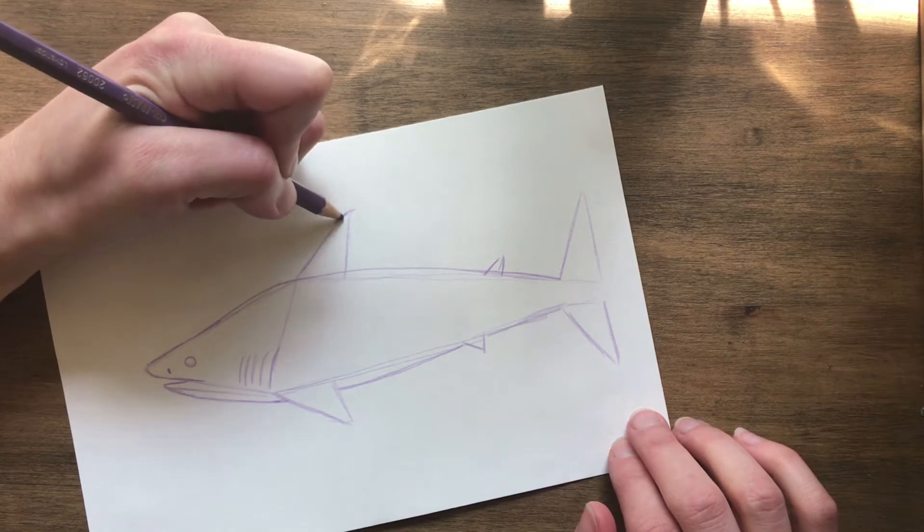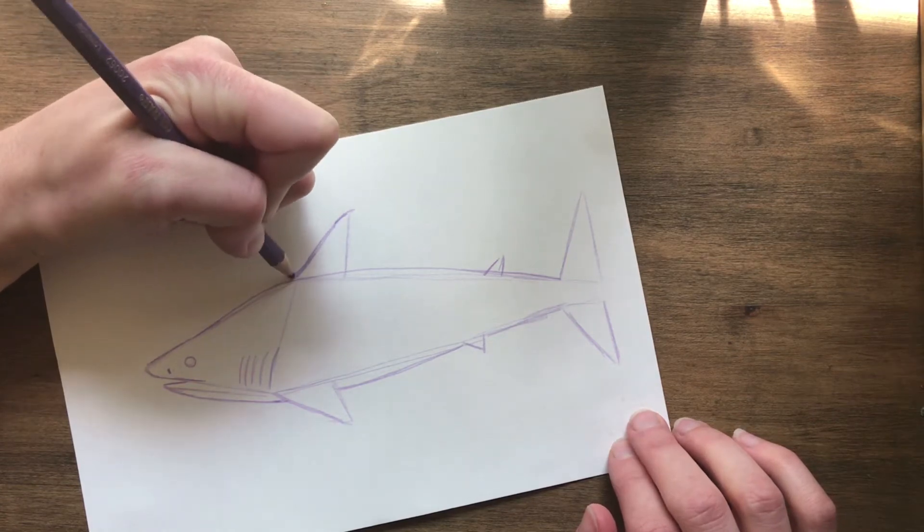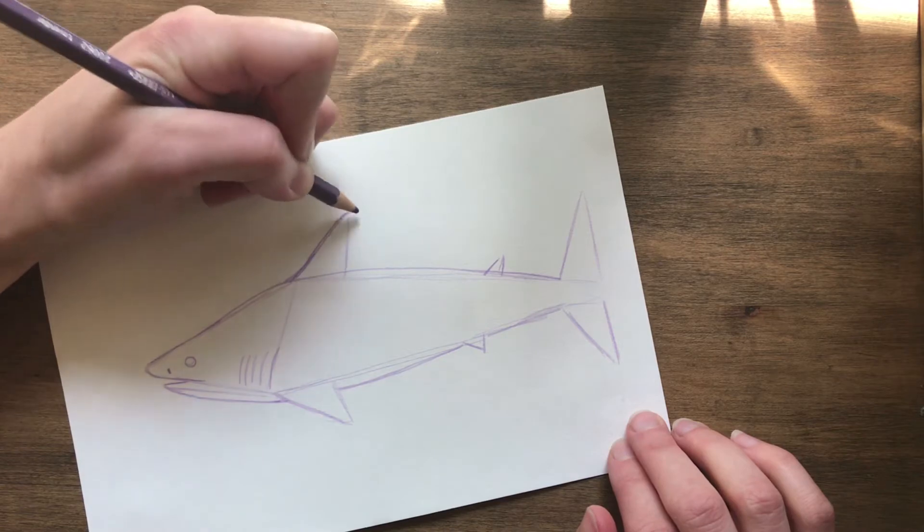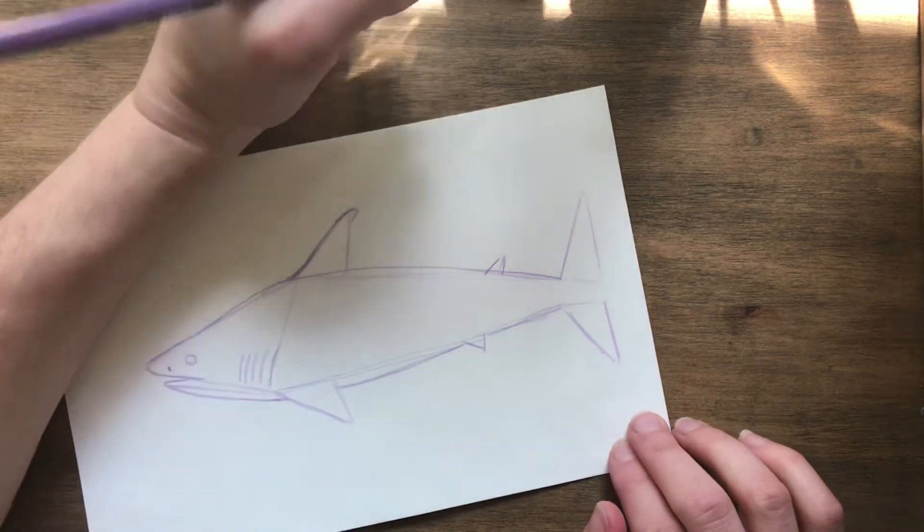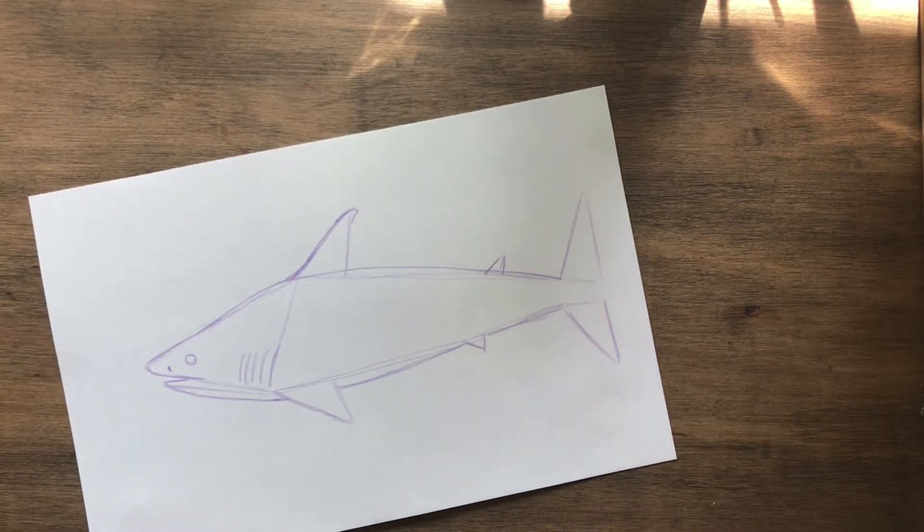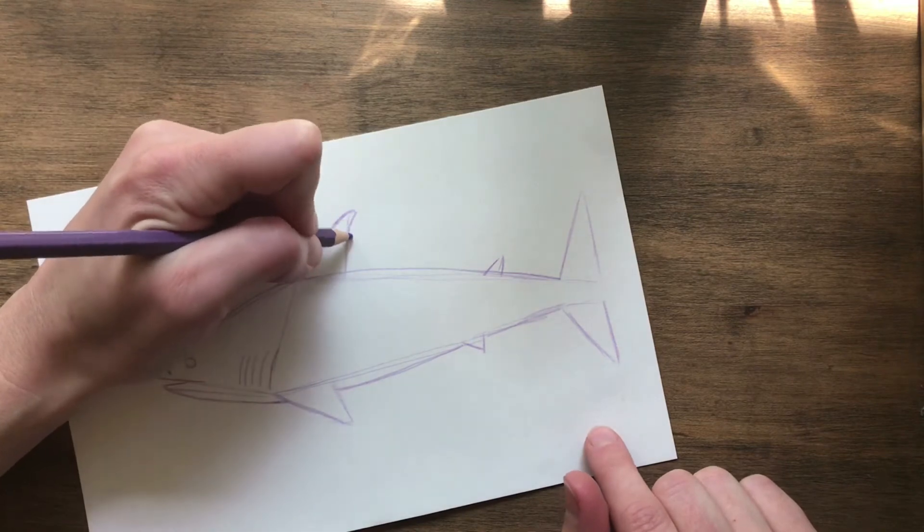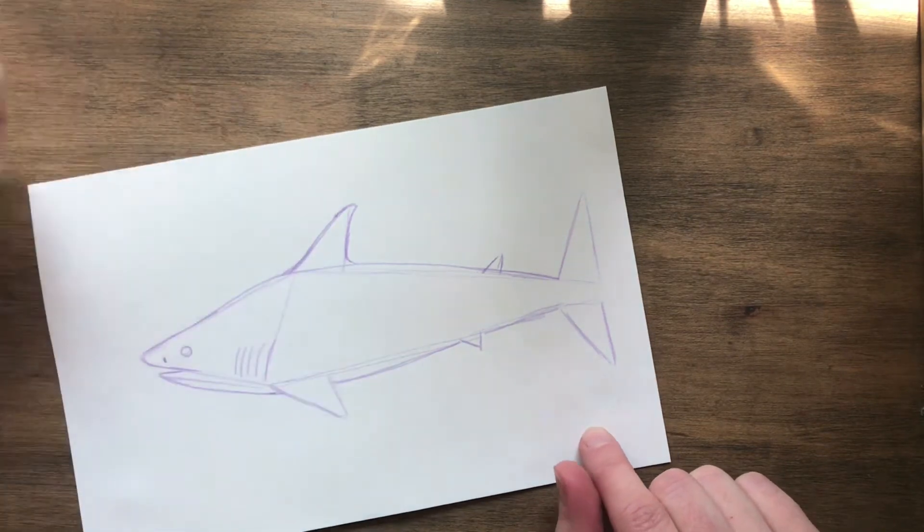Now we are going to round out all the fins. And this one you are going to kind of bring it in towards the body to smooth it out. And the tip of it is going to point a little bit towards the back of the shark. And then you are going to swoop it around and join it to the body.